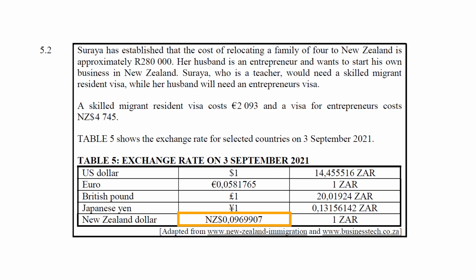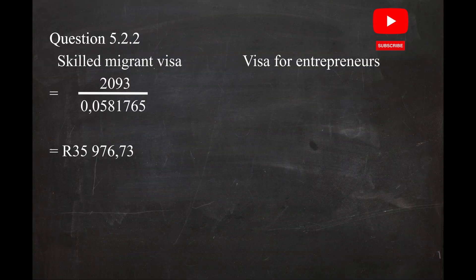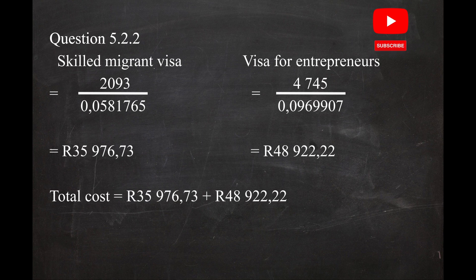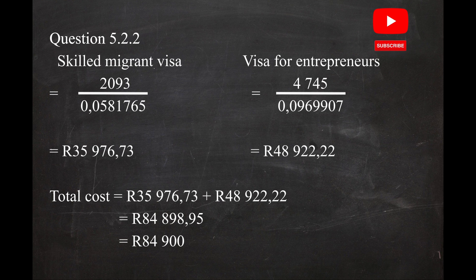From the table, 1 South African rand equals 0.0969907 New Zealand dollars, so the entrepreneurial visa costs 4,745 New Zealand dollars divided by 0.0969907, giving a cost of 48,922 rand 22 cents. The total cost of the two visas is 35,976 rand 73 cents plus 48,922 rand 22 cents, equalling 84,898 rand 95 cents. Rounded to the nearest 100 rand, the total cost is 84,900 rand.